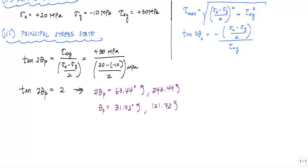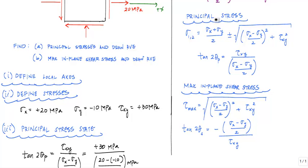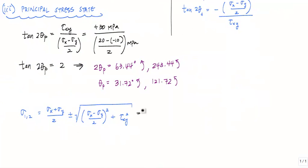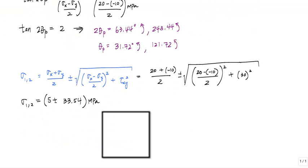Now I have to determine what the actual principal stresses are. And I can do that using this relationship right here. And here I can just go ahead and plug and chug my values. So my principal stresses are 5 plus or minus 33.54. I have two of them.